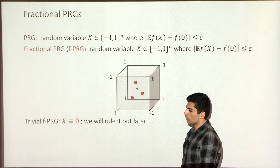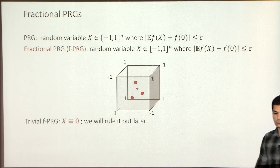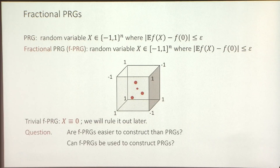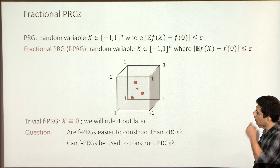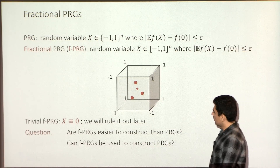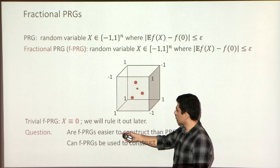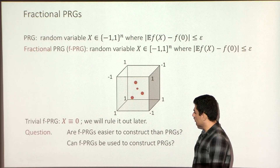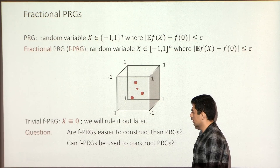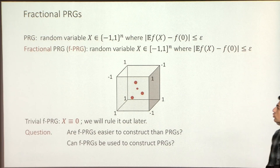There is one problem with this relaxation: I could just take the center as my random variable — it's always f(0), so epsilon would be zero, giving a trivial pseudorandom generator. We have to rule out this case. So there are two questions: first, is this relaxation helpful — can we construct fractional PRGs more easily? Second, can we use these fractional versions to get standard pseudorandom generators?